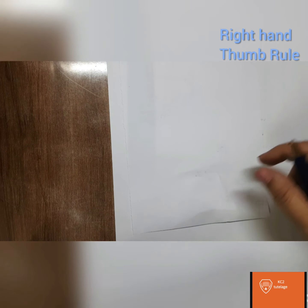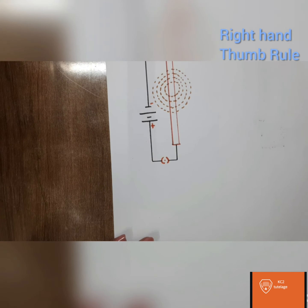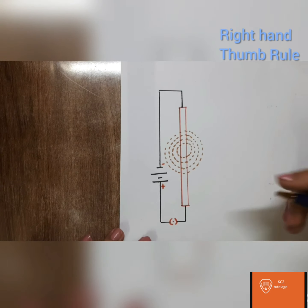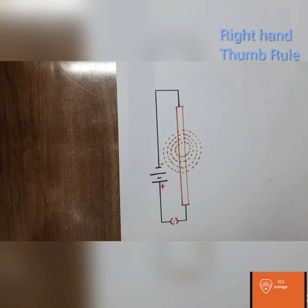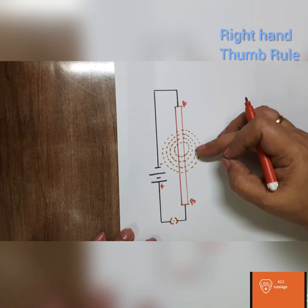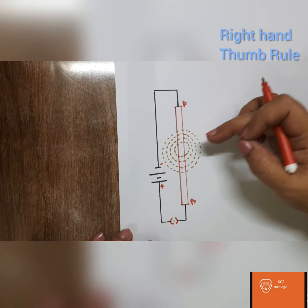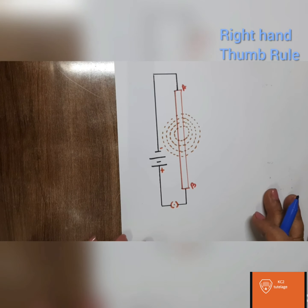Now let us apply this rule to a straight current carrying conductor. Imagine AB is a conductor — this is a current carrying conductor. We know a magnetic field is developed around it. We will see by applying the right hand thumb rule which direction the magnetic field is. Before that, let us mark the flow of current.